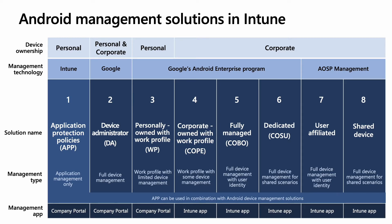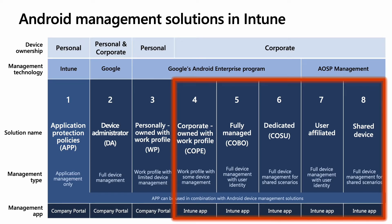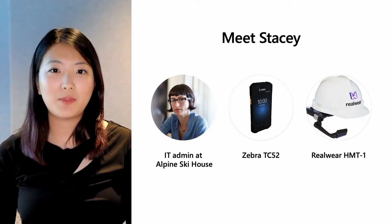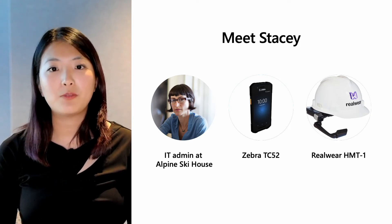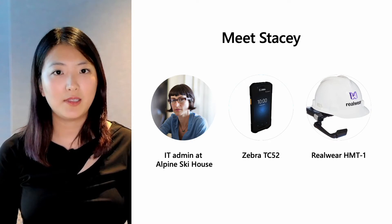We've been investing in bringing this to AOSP devices, and I'll dive into that more near the end of the session. On a device that's used by a frontline worker, you'll probably be managing the device with one of the modes towards the right of the slide, most commonly Android Enterprise Dedicated or one of our AOSP management solutions. We know there are some cases where frontline workers may need a user affinity solution, but I am going to focus mostly on shared devices used for specific jobs across shifts. Over the next 20-something minutes, we'll take a look at some of the recent improvements we've added for IT admins who manage dedicated devices and their frontline users.